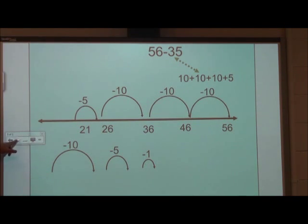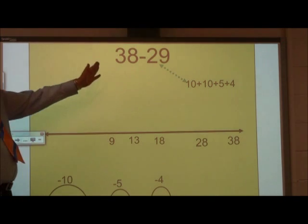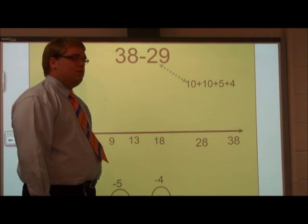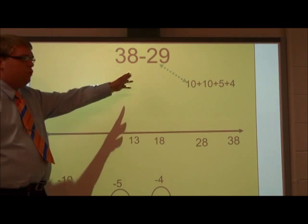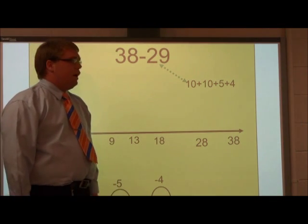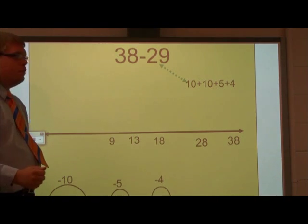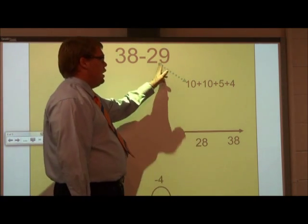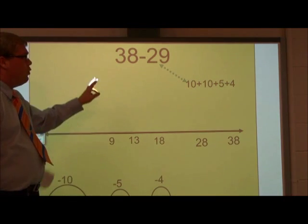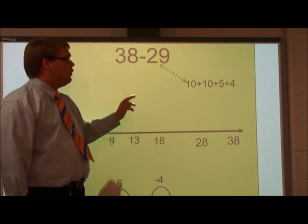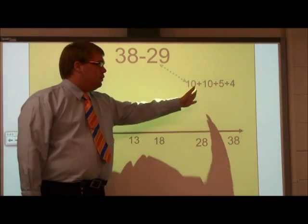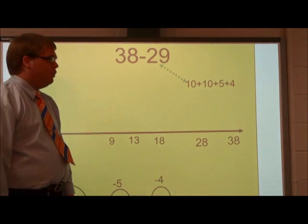So let's try another problem: 38 minus 29. We are going to do this the same way. We are going to take our smaller number, the subtrahend, and break it into parts. 10 plus 10 plus 5 plus 4, which is the same as 29. So we know that 38 minus 29 is the same as saying 38 minus 10 plus 10 plus 5 plus 4.